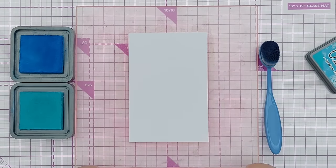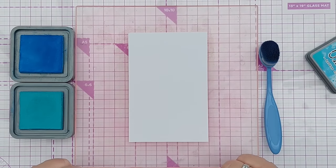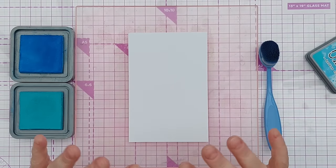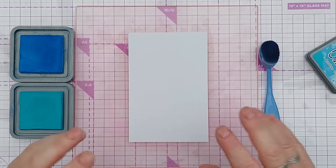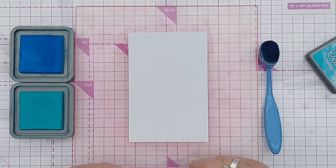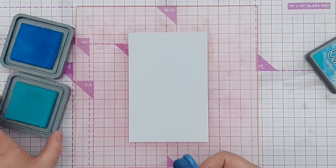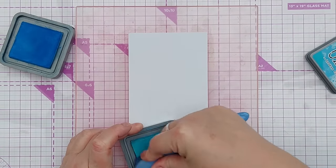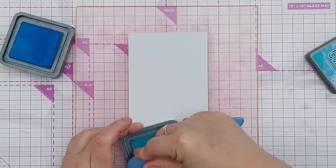So well done if you've made it this far into the video. As a little bonus for you I'm going to show you another couple of ways of toning down strong or bold backgrounds. So I'm going to create a bold background using two distress oxides.